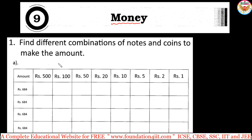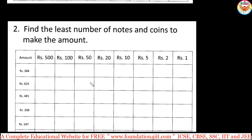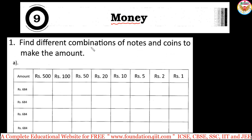One type is: given different notes like 500, 100, 50, 20 — the coins and notes with the same amount — what are the different combinations they can make? The other type is: with a different amount, what is the least number of notes and coins needed to make that amount? I am giving a link in the description below with 10 to 15 worksheet questions. You can find the link, download it, and practice the remaining problems.